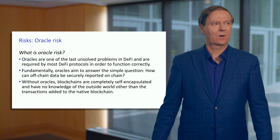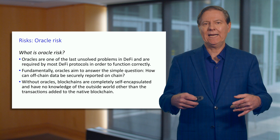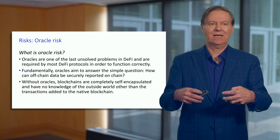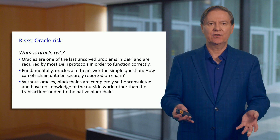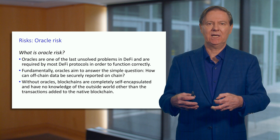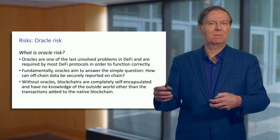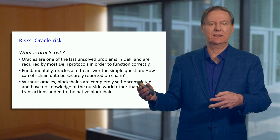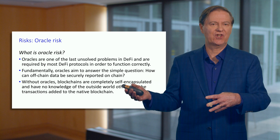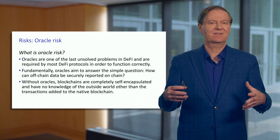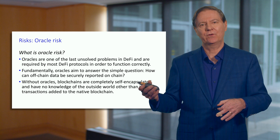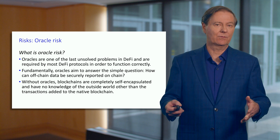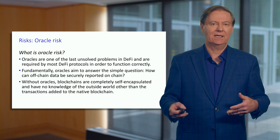Oracles, as I've described previously, are a way to get information into a blockchain that doesn't actually exist on the chain. That information needs to be obtained outside. It might be a market price from, for example, an exchange. It might be some other type of data, but you need to go outside. And when you go outside, that immediately creates risk. We talked about some of the risk in terms of manipulating the data source.